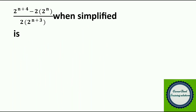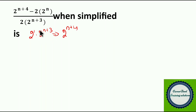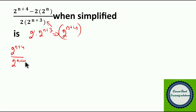Moving to the next question: 2 power (n plus 4) minus 2 into 2 power n, divided by 2 into 2 power (n plus 3). How to solve this problem? If you look at the denominator, you have 2 power 1 into 2 power (n plus 3). Solving the denominator first, 2 power 1 into 2 power (n plus 3) equals 2 power (n plus 4), since a power m into a power n equals a power m plus n. So the denominator is 2 power (n plus 4). Making 2 power (n plus 4) common for both terms in the numerator, we get 2 power (n plus 4) by 2 power (n plus 4) minus 2 power (n plus 1) by 2 power (n plus 4). The 2 power (n plus 4) terms cancel.